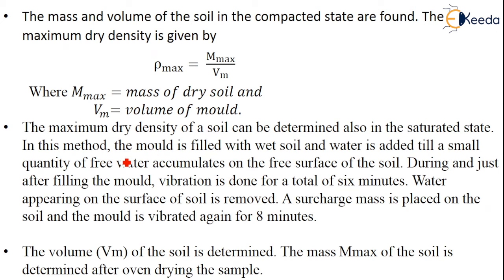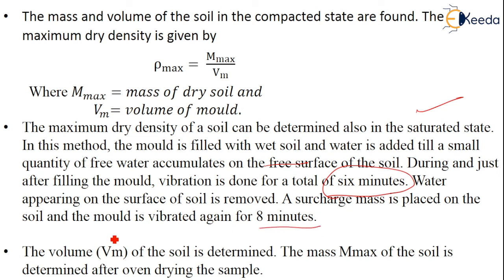The maximum dry density can also be determined in the saturated state. In this wet method, the mold is filled with wet soil and water is added until some free water accumulates on the surface. Vibration is done for a total of 6 minutes during filling, compared to 8 minutes in the dry method. Water appearing on the surface is then removed carefully. A surcharge mass is placed on the soil and the mold is vibrated again for about 8 minutes. The volume Vm and the mass Mx of the soil are determined after oven drying the sample, giving ρmax.